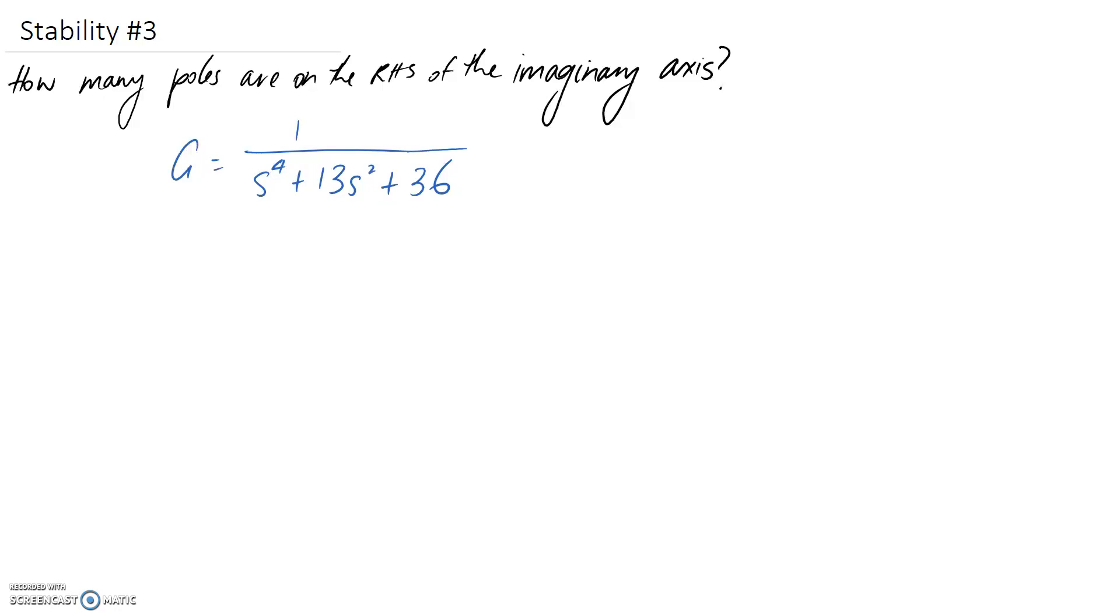So for this question, we're asked to find how many poles are on the right-hand side of the imaginary axis, and we're going to do this using the Routh table.